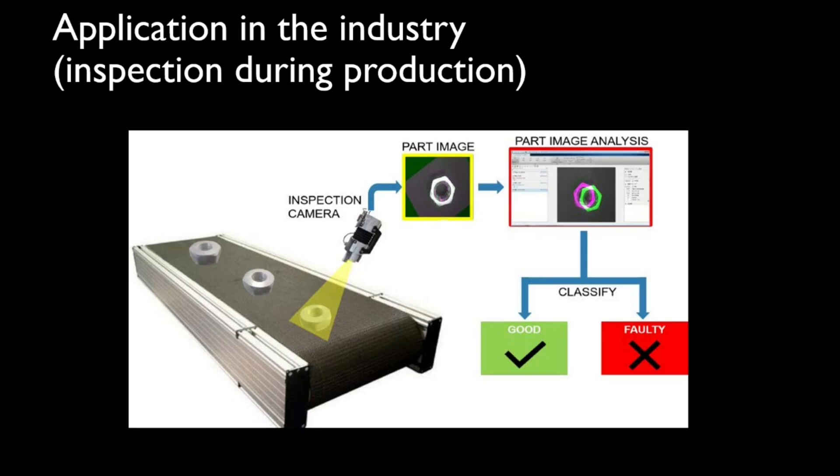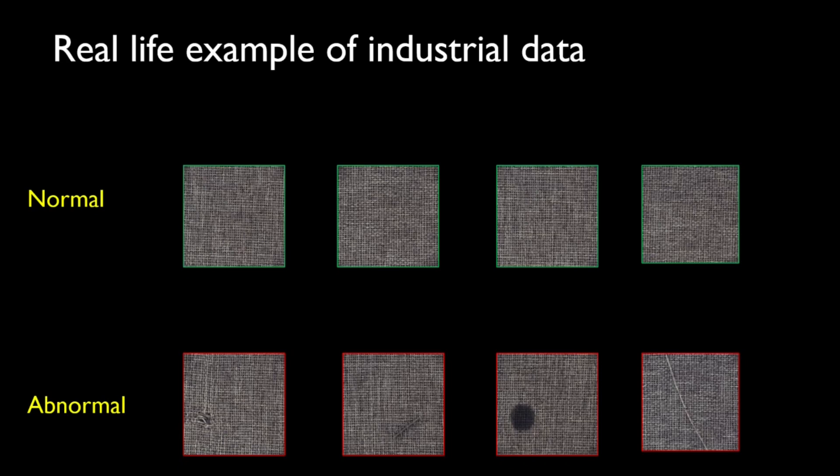And once this picture goes to the model, it decides whether it's good or faulty. For now, we'll look at two examples. The top one belongs to the normal case of the product and the below it represents the abnormal case. So in the abnormal case, we see there is intrusions, there is color, there is threads. So anything can be possible of abnormal classes.